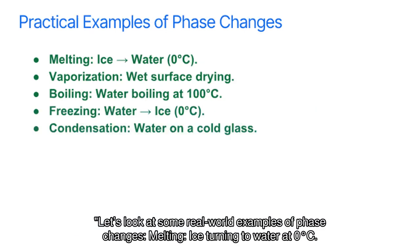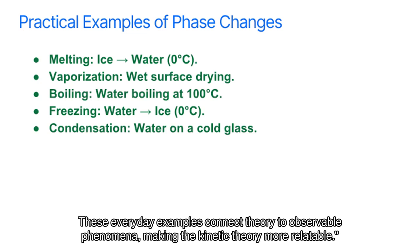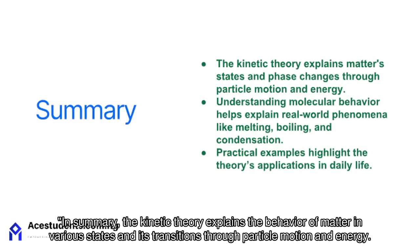Let's look at some real-world examples of phase changes. Melting: ice turning to water at zero degrees Celsius. Vaporization: drying of a wet surface. Boiling: water boiling at 100 degrees Celsius. Freezing: water forming ice at zero degrees Celsius. Condensation: water droplets on a cold glass. These everyday examples connect theory to observable phenomena, making the kinetic theory more relatable.